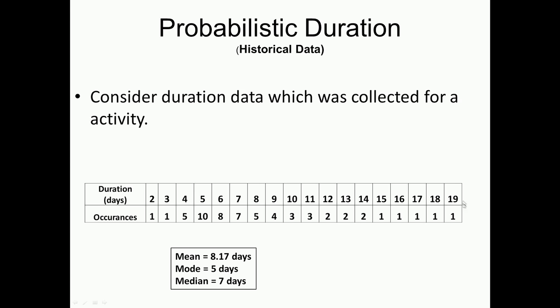So if we take historical data, what I have given here is a table. How would I collect historical data? What we would take is an activity, and you can see the number of occurrences of a particular duration that activity has undergone. The activity has been done in as short as 2 days and as long as 19 days. And this is really the frequency of occurrence of the various days. You can see that on 1 instance it was done in 2 days, in 1 instance 3 days, on 5 instances 4 days, 10 instances 5 days, in 8 instances it took 6 days and so on. So this is basically my historical data. Now I can do my statistics, my basic central tendency statistic on this, and I get the mean of this is 8.17 days, the mode is 5 days, and the median is 7 days.